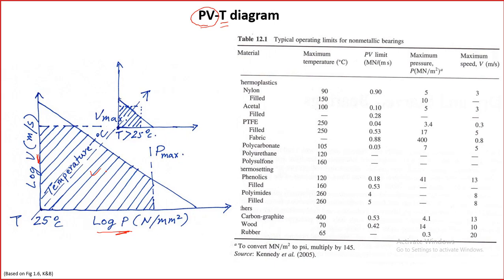It doesn't tell us exactly what the friction or wear rate is, but it gives a limit. For example, if the wear rate for different applications should be within 10 to the minus seven in terms of millimeter cubed per Newton meter specific wear rate, that is our limit — the material should not cross that specific wear rate. Within this range the material can survive and does not go into catastrophic failure.